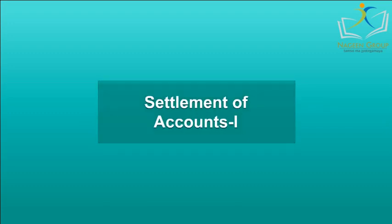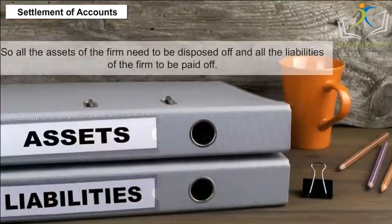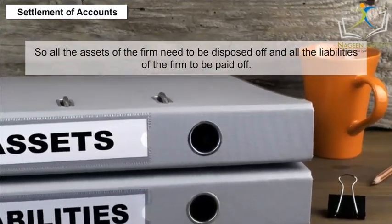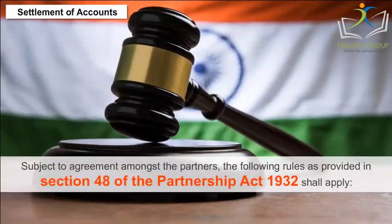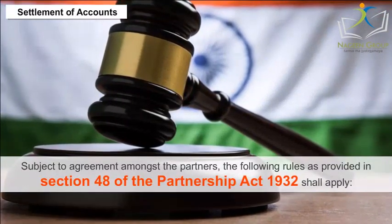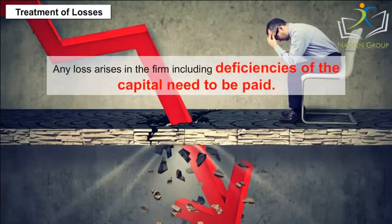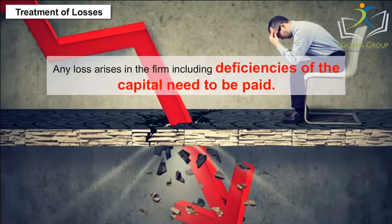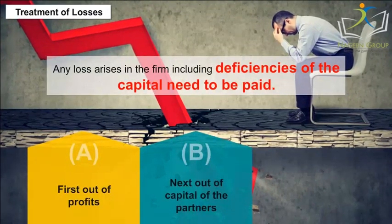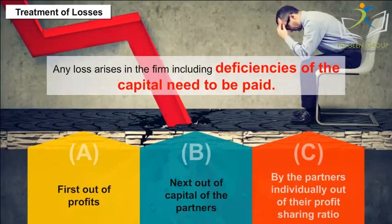Settlement of Accounts: In case of dissolution of the firm, all the assets need to be disposed of and all the liabilities paid off, subject to agreement amongst the partners. The following rules as provided in Section 48 of the Partnership Act 1932 shall apply. Treatment of Losses: Any loss arising in the firm, including deficiencies of capital, need to be paid — first out of profits, next out of capital of the partners, then by the partners individually out of their profit sharing ratio.